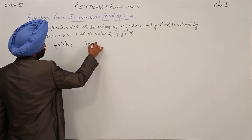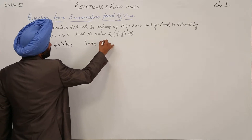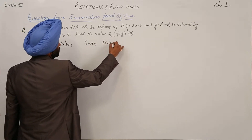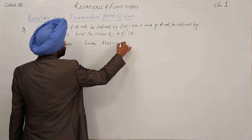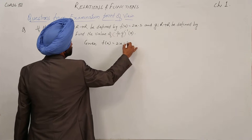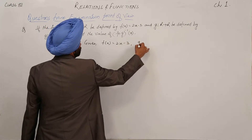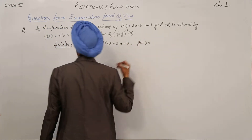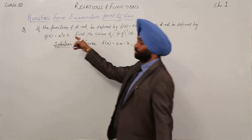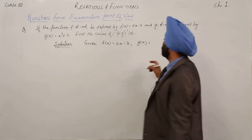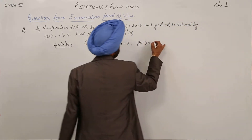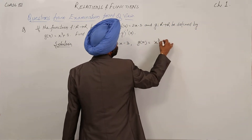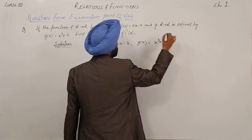Given: f(x) = 2x minus 3, and g(x) = x cube plus 5.